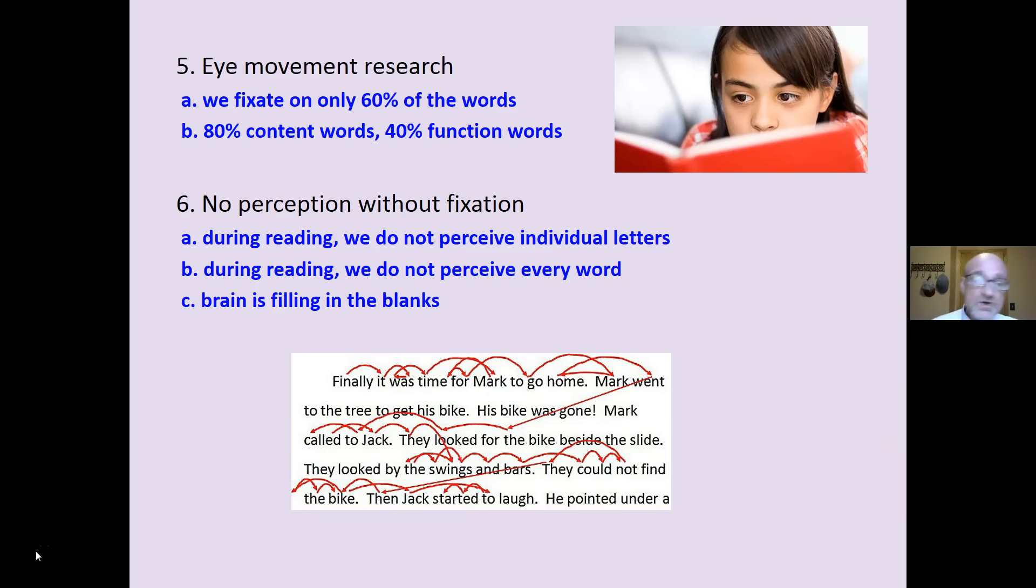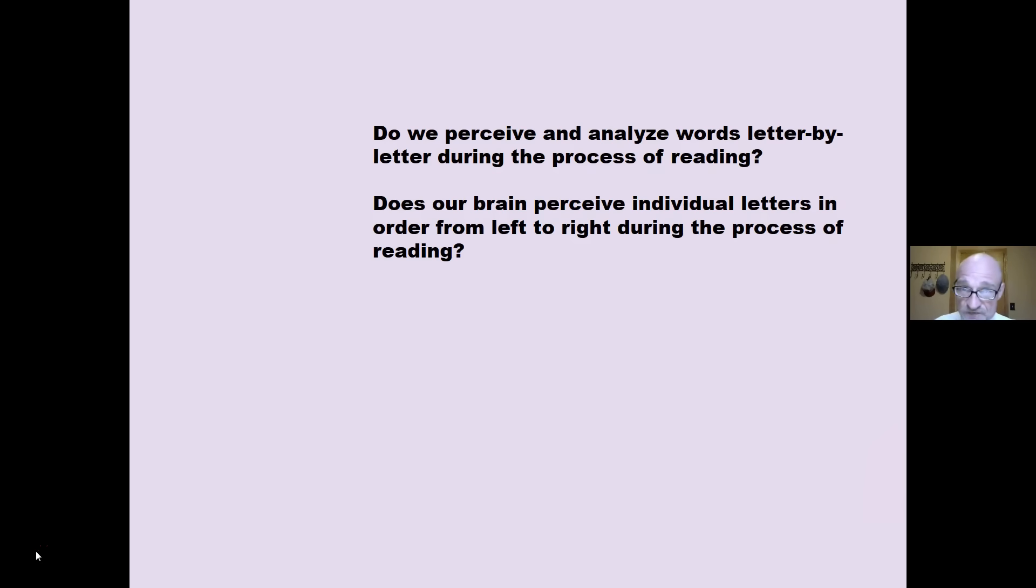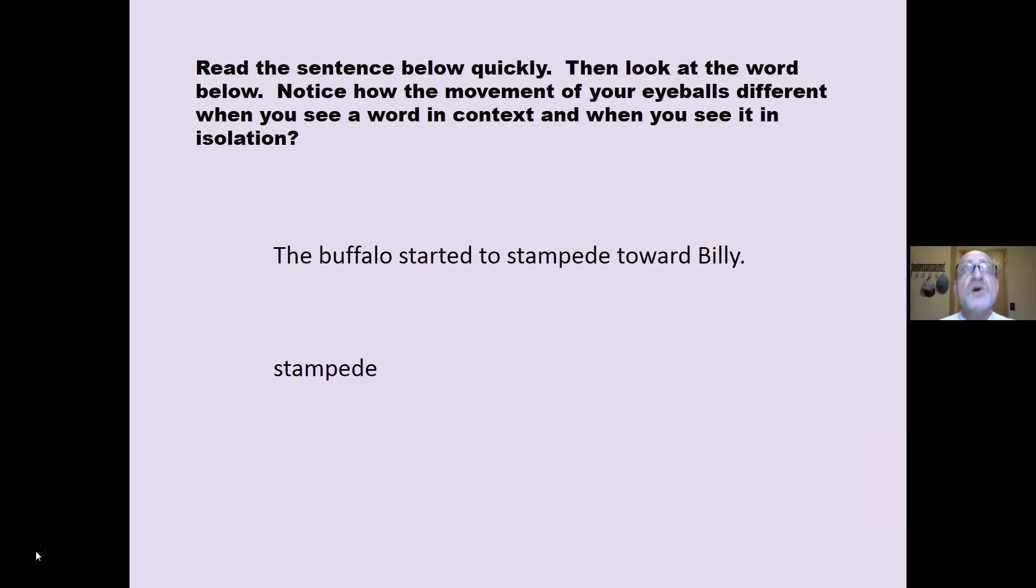Sometimes there are regressions as it needs to go back and check and do some check-ups and fix-ups. That's what happens. Eye movement research demonstrates that. Do we perceive and analyze words letter by letter during the process of reading? Does our brain perceive individual letters in order from left to right during the process of reading? Let me see. We do not go through that process in a microsecond. That would not be very efficient at all. It would take me a long time to read.